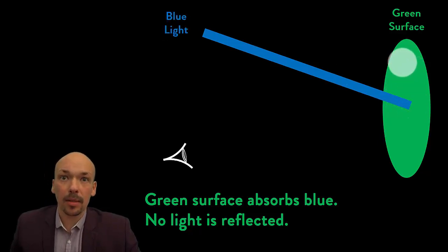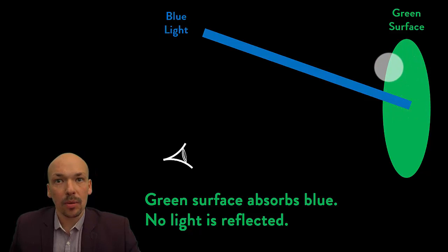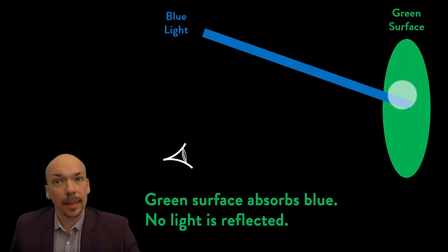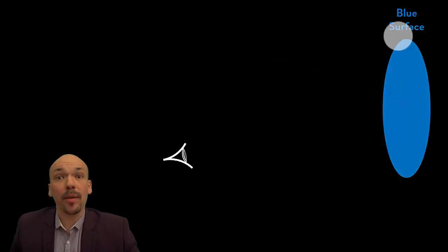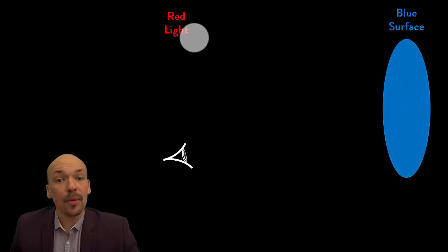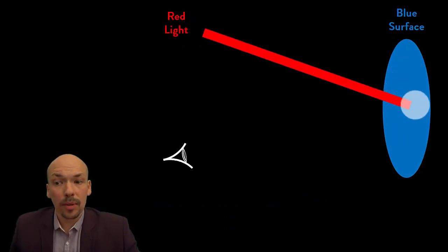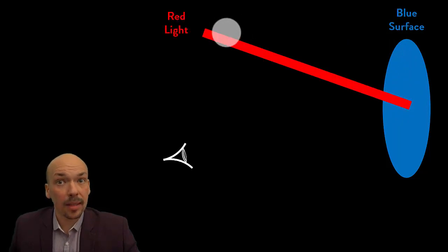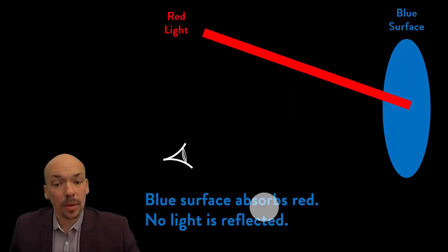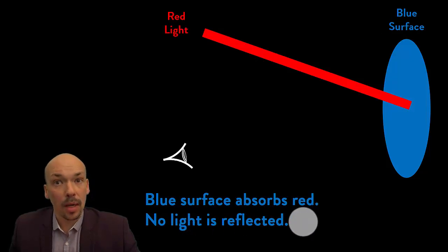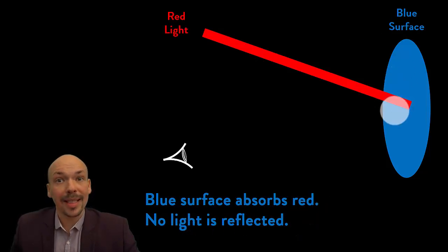The surface cannot make its own light — that would make it a light source — so you will not see the green surface; it will appear black. Another example: if you have a blue surface and red light, the blue surface wants to reflect only blue and cannot reflect the red light. The blue surface absorbs the red light, no light is reflected, and again you will see this as black.